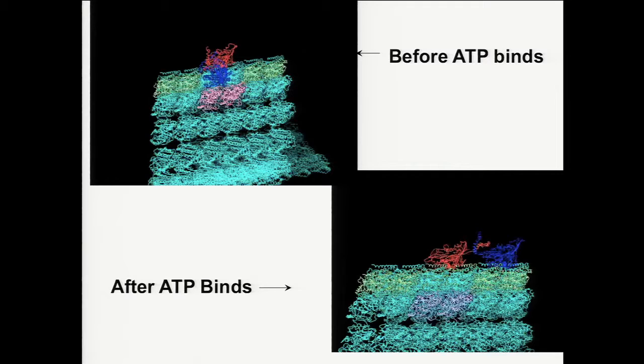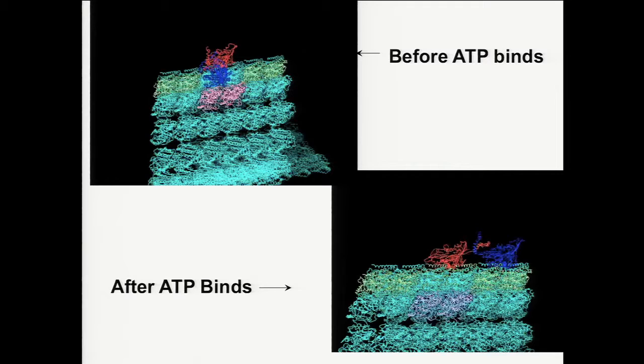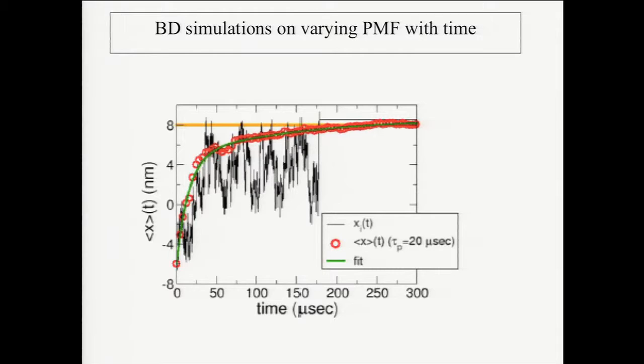If you do a simulation turning on binding at the proper time scale — about 20 microseconds — and average over multiple trajectories from the bound to unbound state, a single trajectory is very noisy, but averaged over multiple trajectories, you see what experiments show.